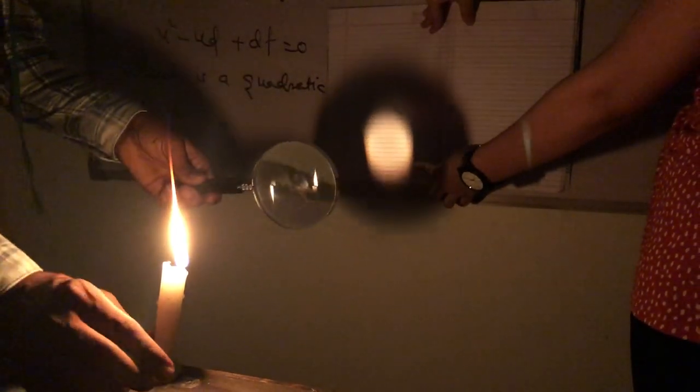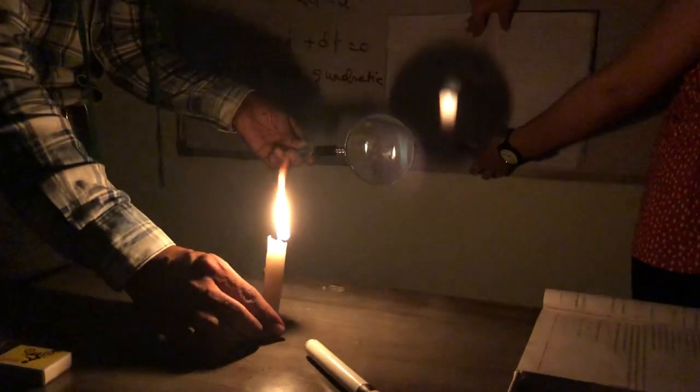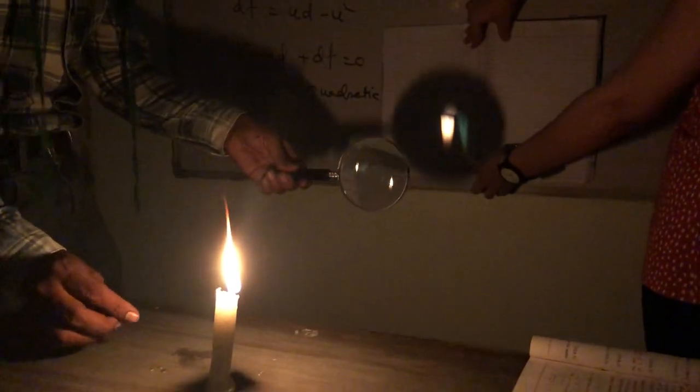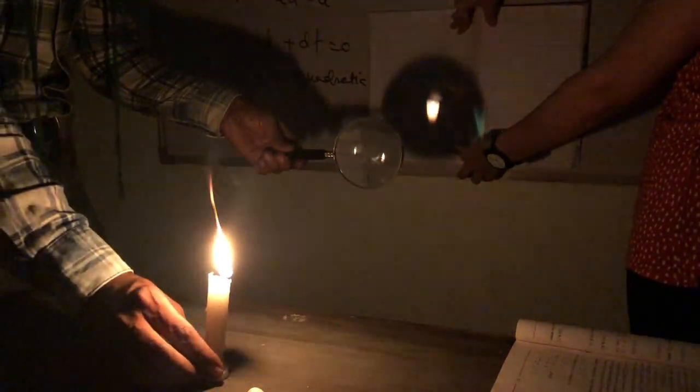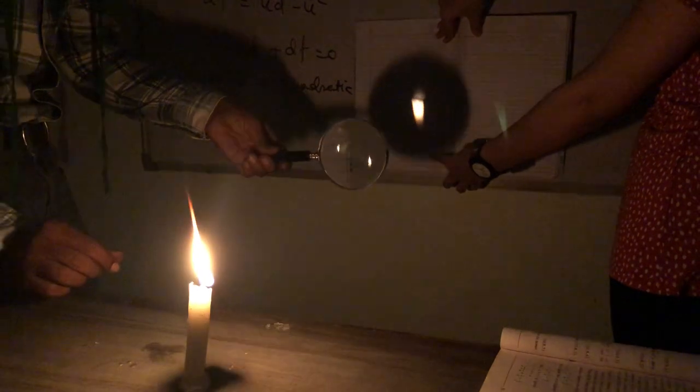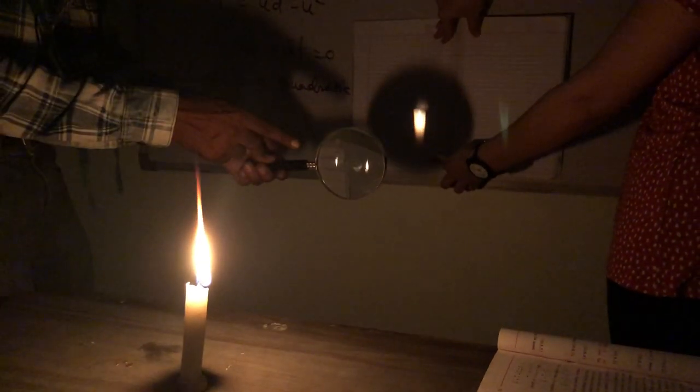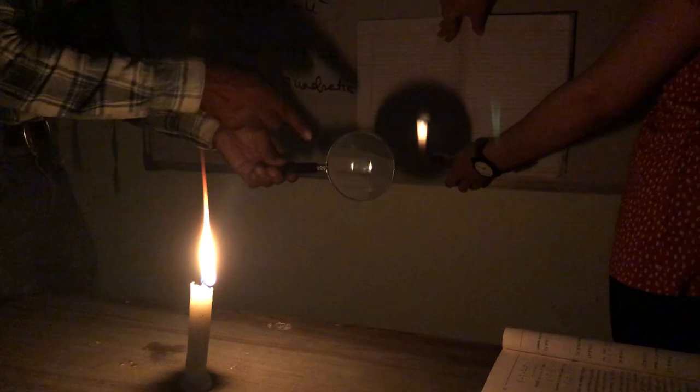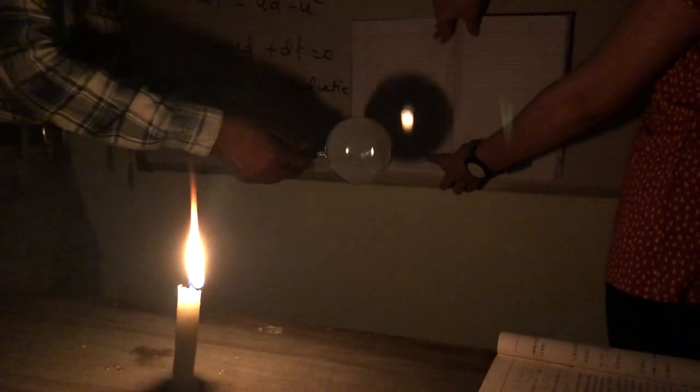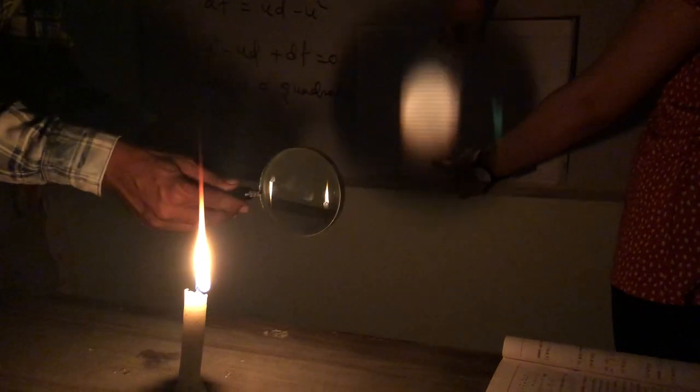But if we make the distance exactly 4F—the distance between the candle flame, which is the object, and the screen—then the lens position is exactly in the middle. This one is 2F and this one is 2F. If we move this way, the image is blurred. And if we move this way, then also it is blurred.